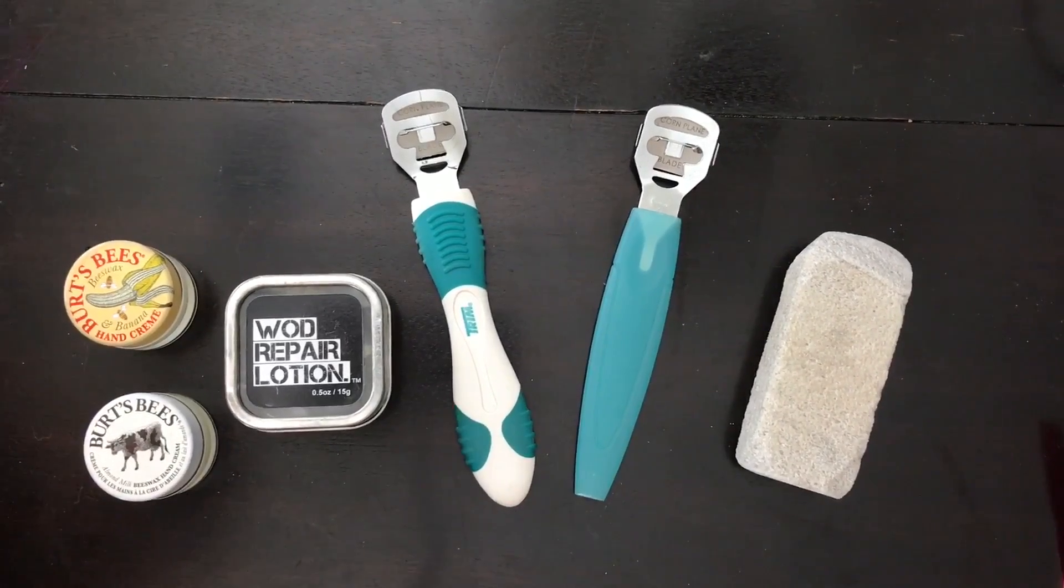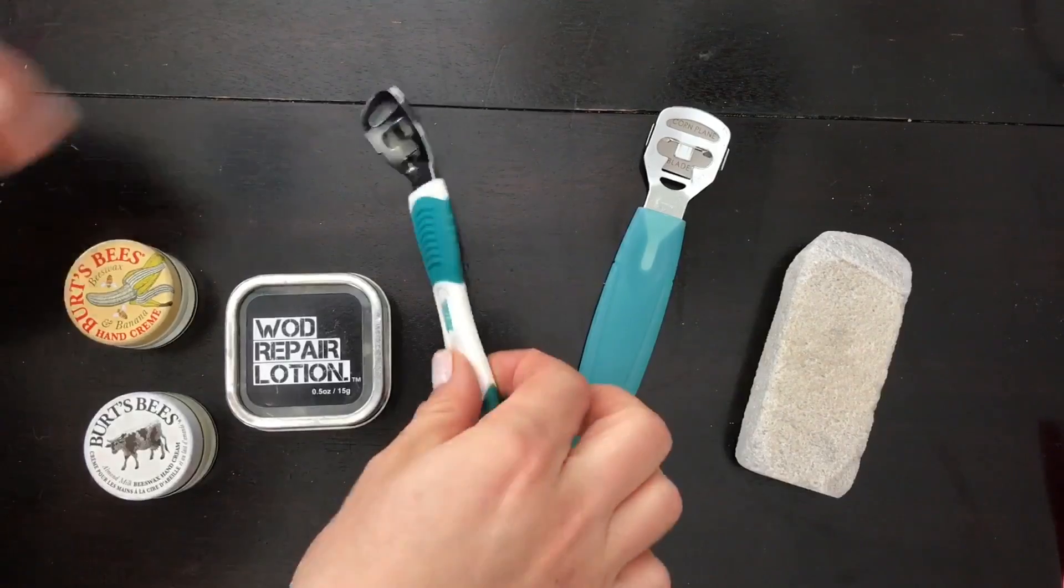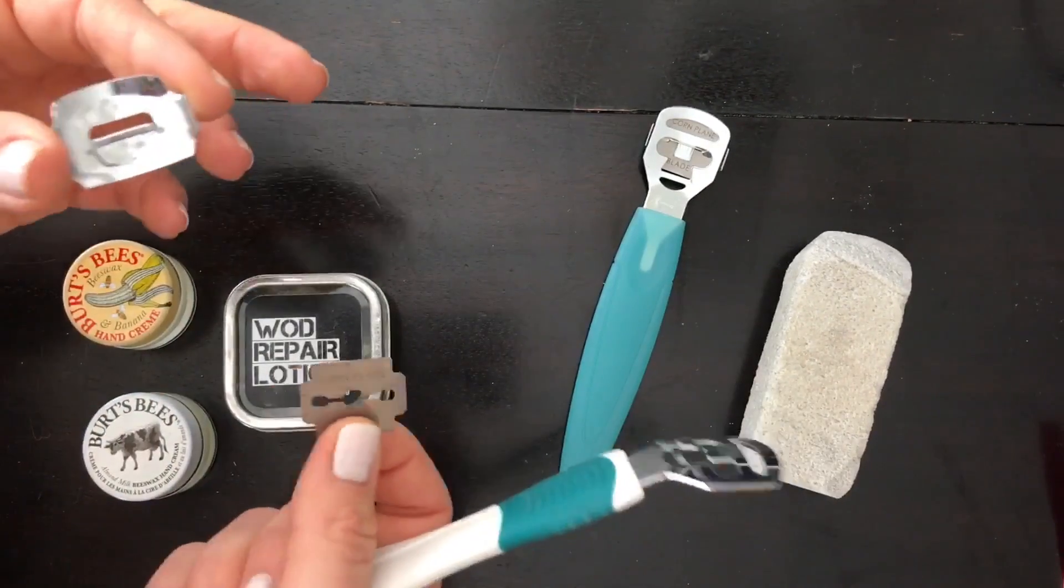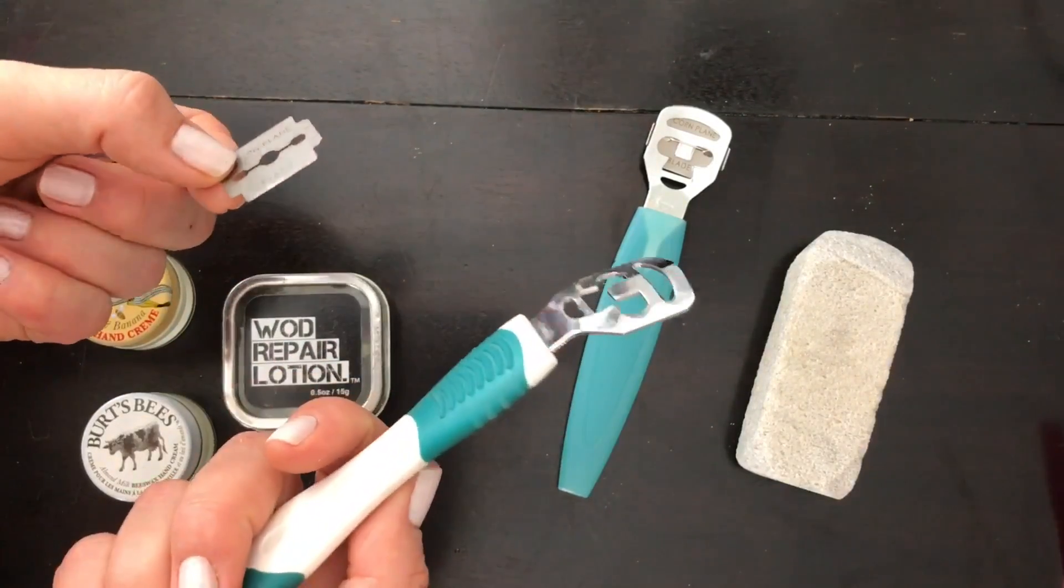First, a few of the tools that I like to use, the most important ones for me are these. These are both callus shavers. They're really a simple tool. You can find them in any manicure or pedicure area of a drugstore, like Walmart or Target, and they typically run $5 to $10.